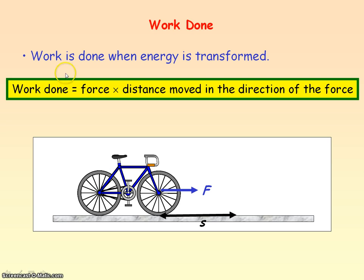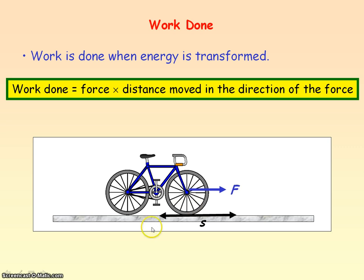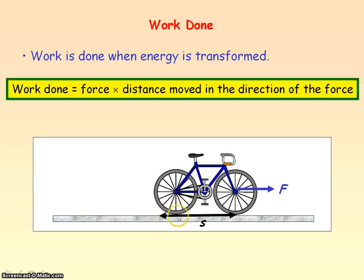The definition of work done is given by this equation: it is the force multiplied by the distance moved in the direction of the force. In this case, we have a bicycle and we are applying a force F to the right, and the bicycle moves a distance S to the right. This distance is in the same direction as the force F, so the work done is equal to F times S.